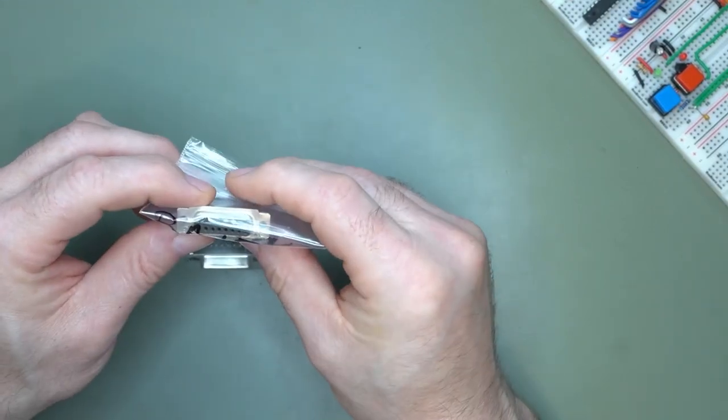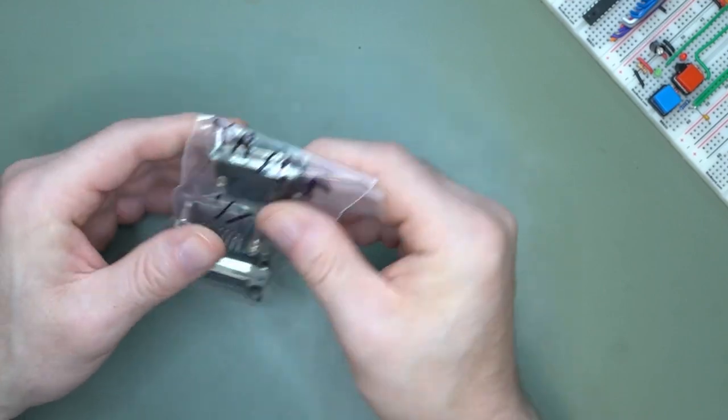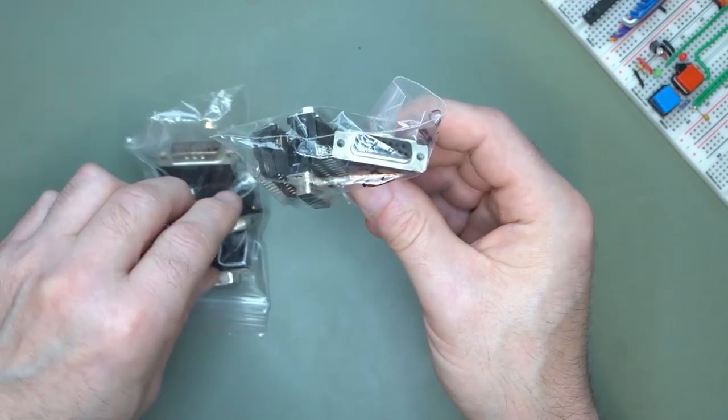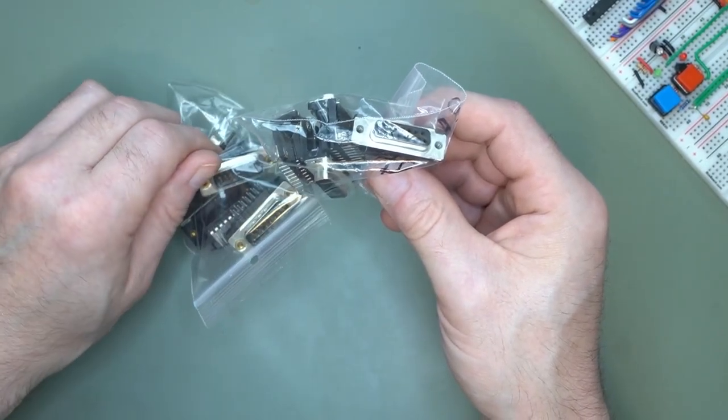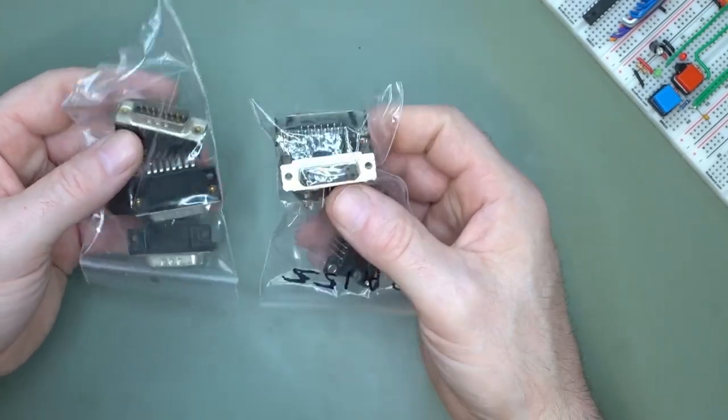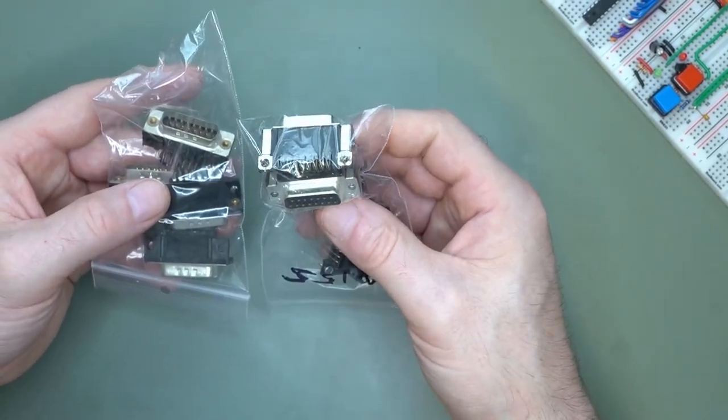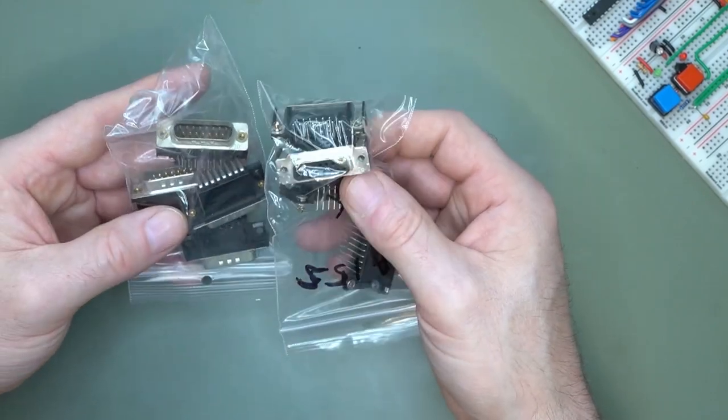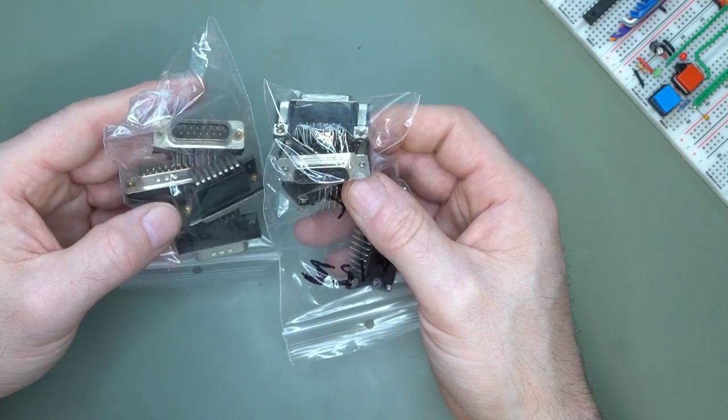I have DB15 connectors, not the HD15, the standard two-row DB15. I've got four female and four male ones. Not sure how I can implement those. If it would have been 16 or 20, I could have used a PIO for them, but 15, hmm. Any ideas, comment down below. I just bought them, they were cheap.